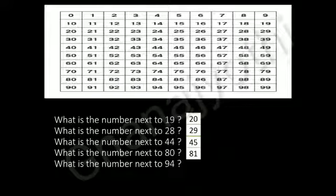What is the number next to 94? The number 94 is located in the number chart here. So, next to 94 is 95.